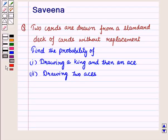Hello and welcome to the session. In this session we will discuss a question which says that 2 cards are drawn from a standard deck of cards without replacement. Find the probability of: first part, drawing a king and then an ace; second part, drawing 2 aces.